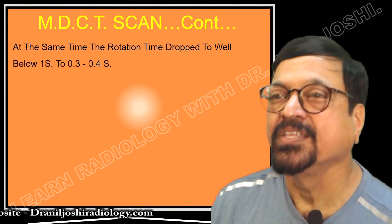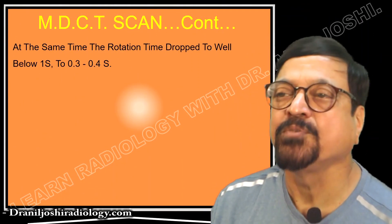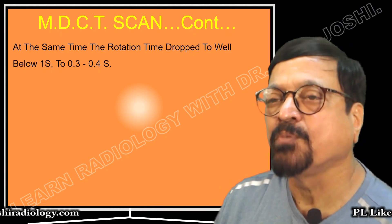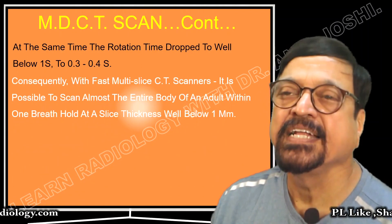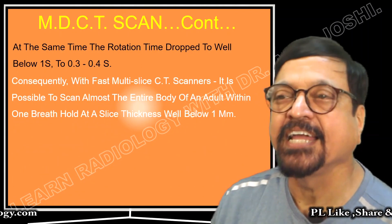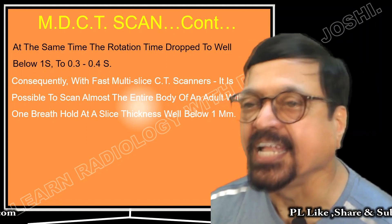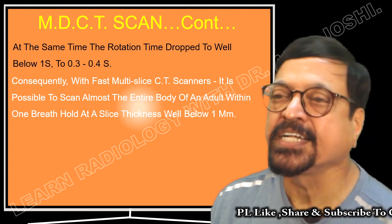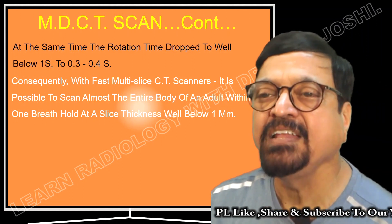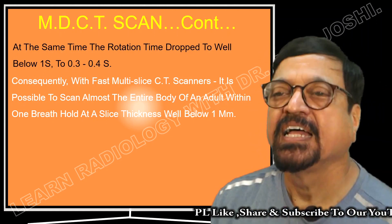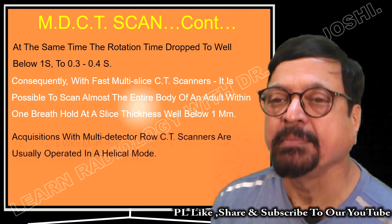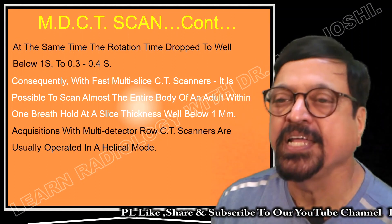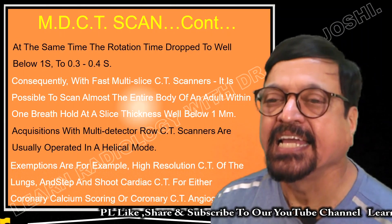At the same time, the rotation time dropped to well below 0.3 to 0.4 seconds — a fraction of a second per rotation. Subsequently, with fast multi-slice CT scanners it is possible to scan almost the entire adult body within one breath hold at a slice thickness of 1 mm. Acquisitions with multi-detector row CT scanners are usually operated in helical mode.